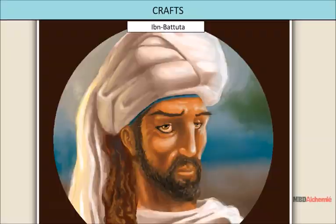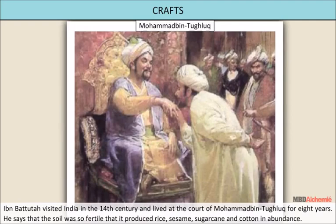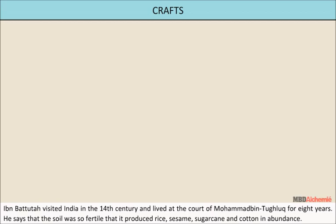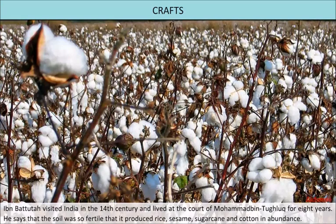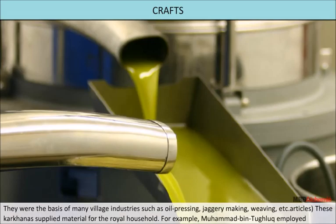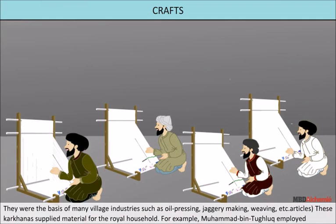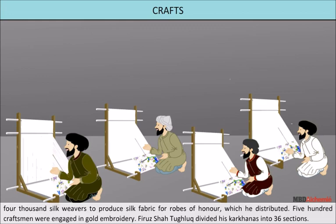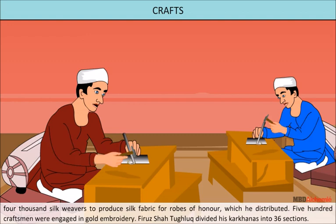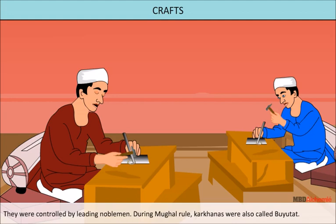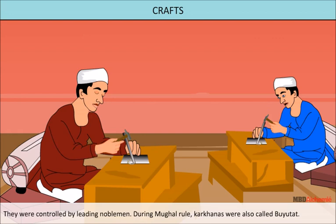Ibn Battuta visited India in the 14th century and lived at the court of Mohammed bin Tughlaq for eight years. He says that the soil was so fertile that it produced rice, sesame, sugar cane and cotton in abundance, which were the basis of many village industries such as oil pressing, jaggery making and weaving. These karkhanas supplied material for the royal household. For example, Mohammed bin Tughlaq employed 4000 silk weavers to produce silk fabric for robes of honour, and 500 craftsmen were engaged in gold embroidery. Firoz Shah Tughlaq divided his karkhanas into 36 sections, controlled by leading noblemen. During Mughal rule, karkhanas were also called Buyutath.